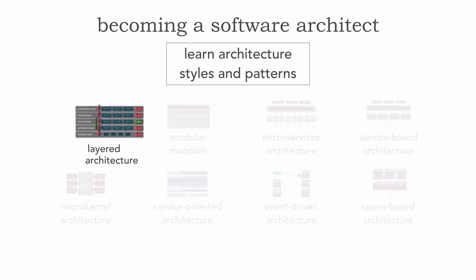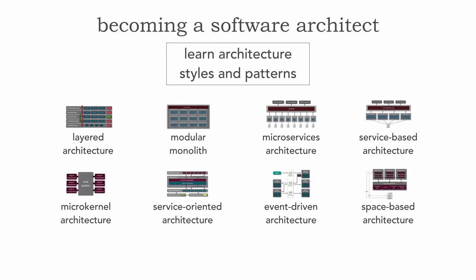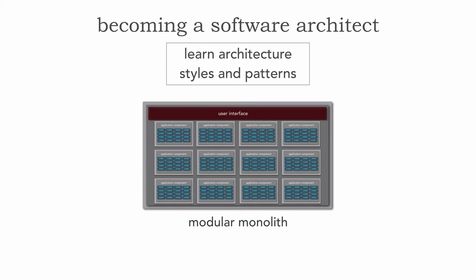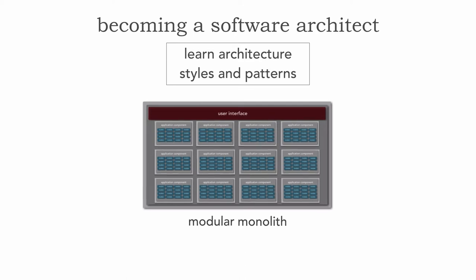Layered architecture kind of fell out of favor in recent years, especially the past decade, in favor of what's called the modular monolith. This is still a monolithic single deployment unit, but the modular monolith is what we call a domain-partitioned architecture. Rather than having our code separated by layers of technical usage, our code is organized into domains, usually manifested through namespaces or package structures. It's a very popular monolithic architecture style, especially for domain-driven design.